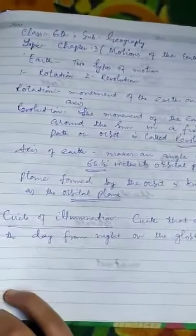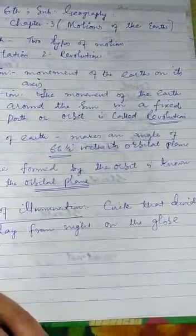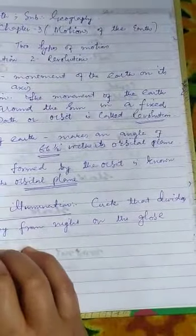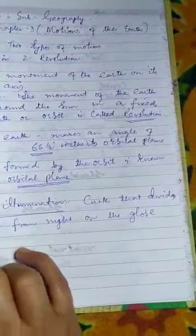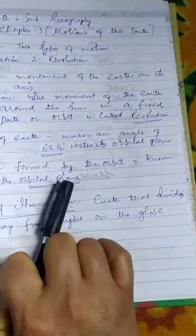This should be known as orbital plane. The plane formed by the orbit is known as orbital plane.